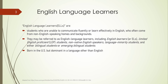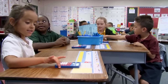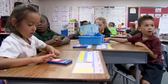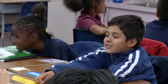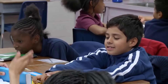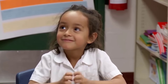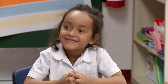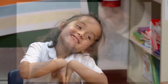They can be born in the U.S. but dominant in a language other than English. Or they can be born abroad and brought to the U.S. at an early age. They may differ in socioeconomic status or academic background.